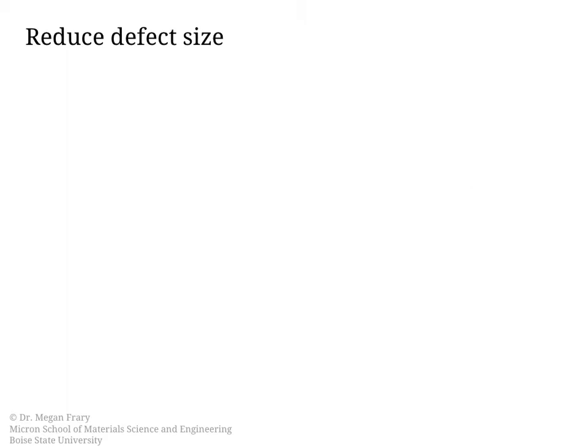The first approach we will consider is essentially to just reduce the defect size in the material. One of the best ways to reduce the defect size is to apply stress during pressing, so during the sintering process. One drawback to this, though, is that these methods are generally much more expensive than traditional sintering itself, but this will reduce the overall porosity that results in the material.